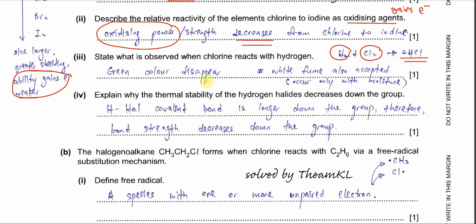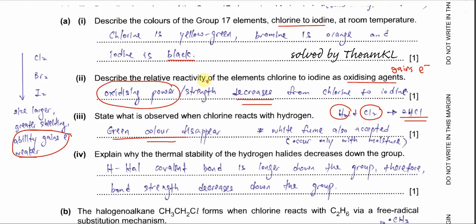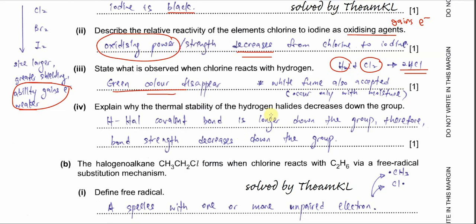Chlorine with hydrogen will form HCl. The best answer is: the yellow-green gas disappears, because when hydrogen reacts with chlorine, the green color disappears as chlorine reacts with hydrogen to form HCl. Some candidates write 'white fume' because HCl can appear as white fume, but that requires moisture. So the better answer is that the green color disappeared.